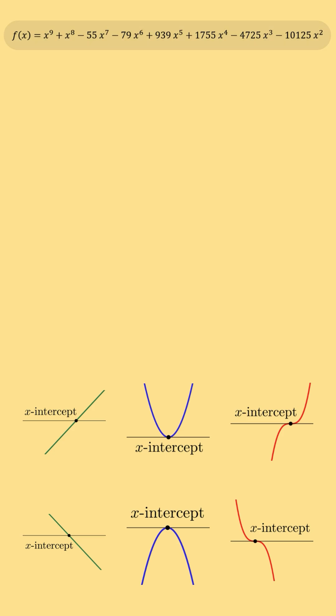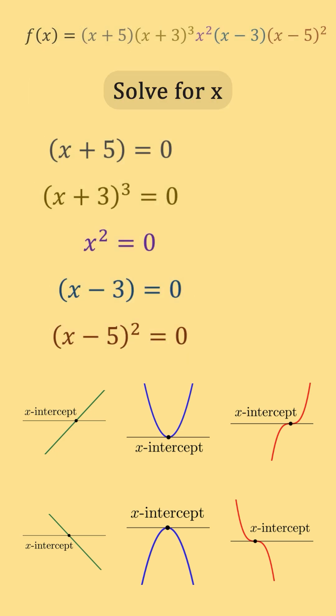Let's start with this polynomial and replace it with its fully factored form. To find the x-intercepts, we set each factor of f(x) equal to 0 and solve for x.